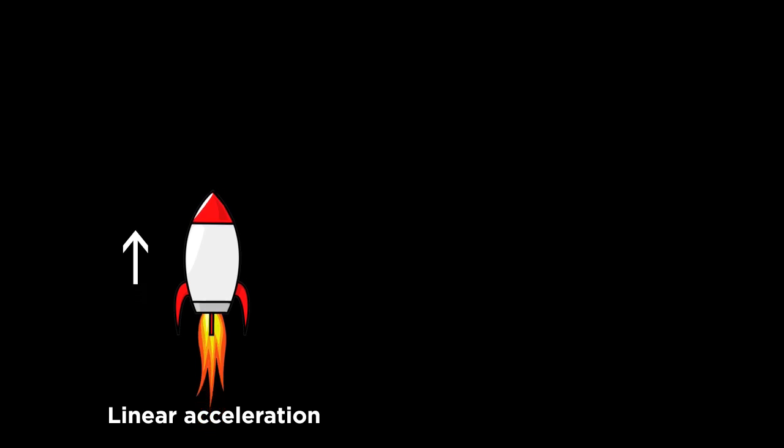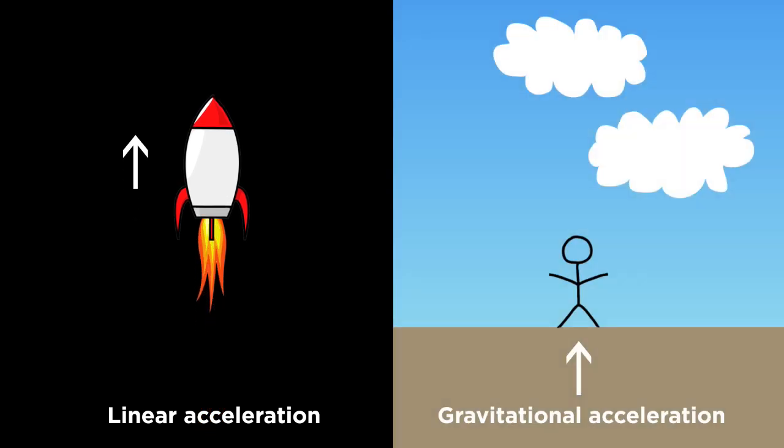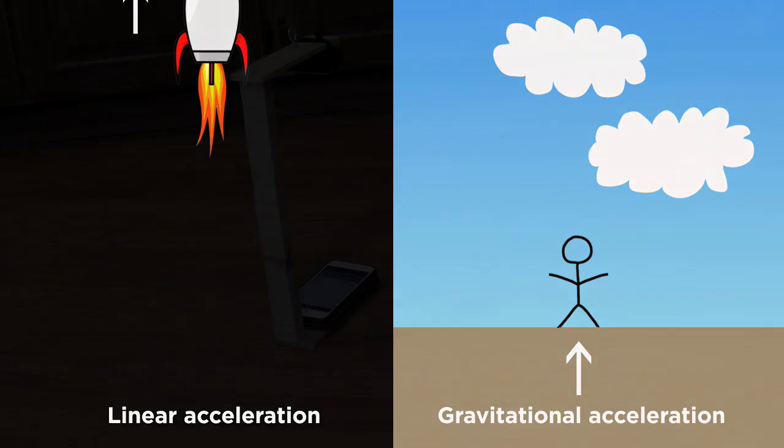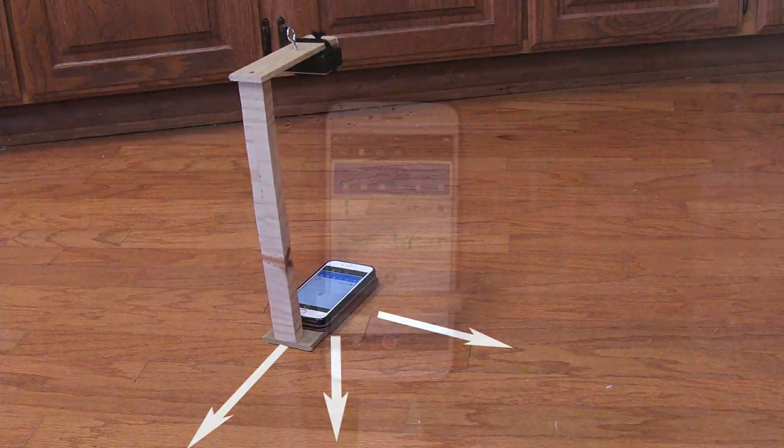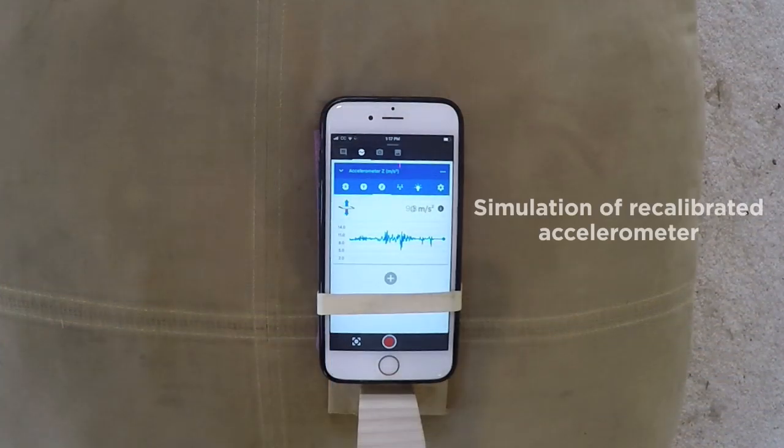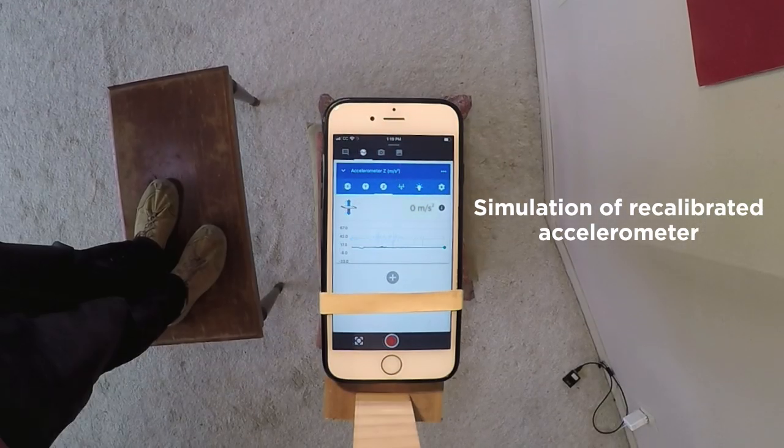Well, maybe you're thinking that the calibration is arbitrary, and accelerometers could just as easily be calibrated to show gravity as a downward pulling force.